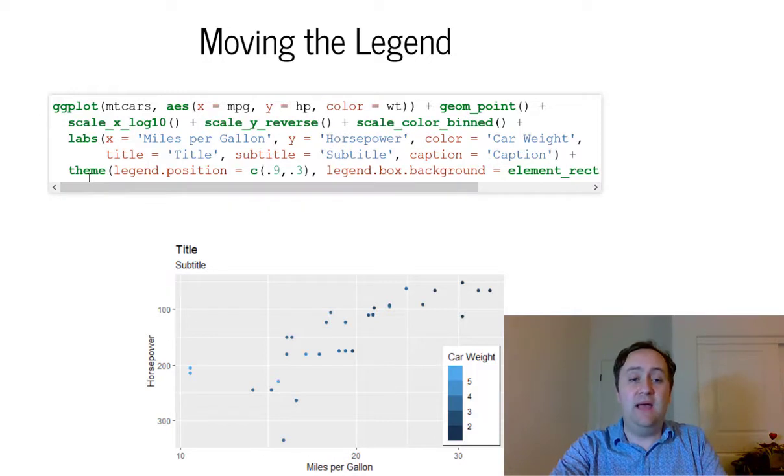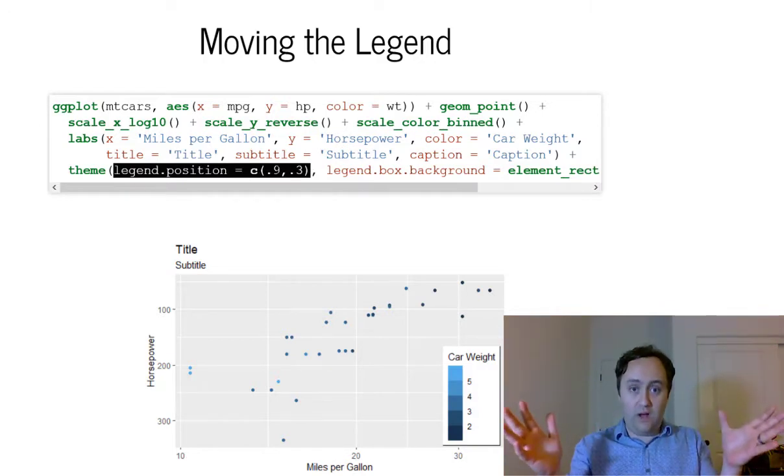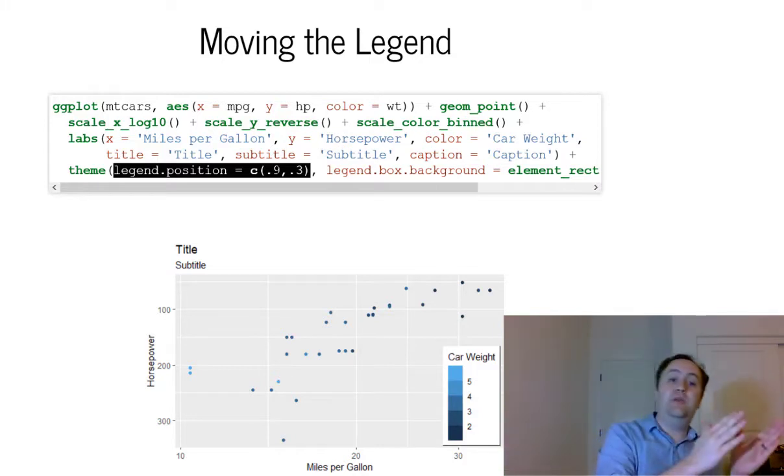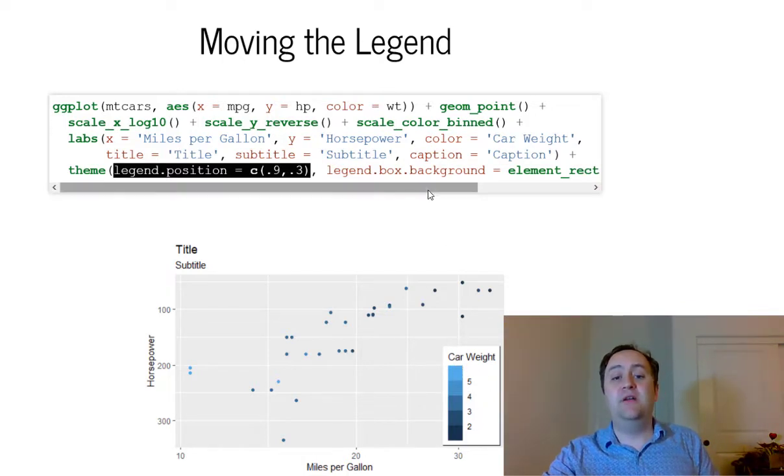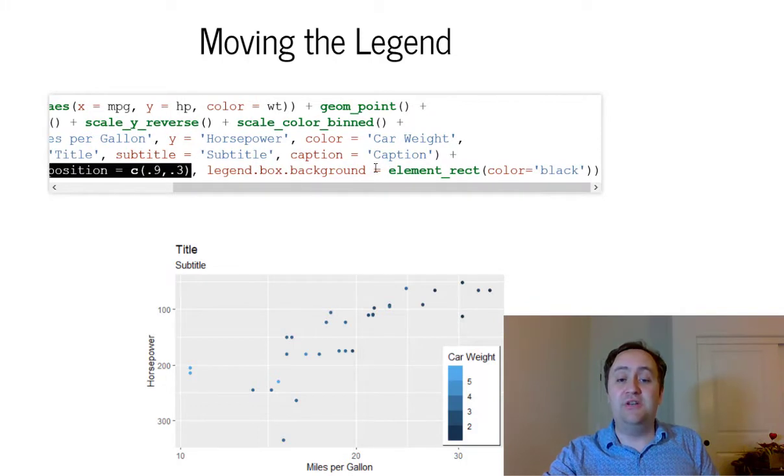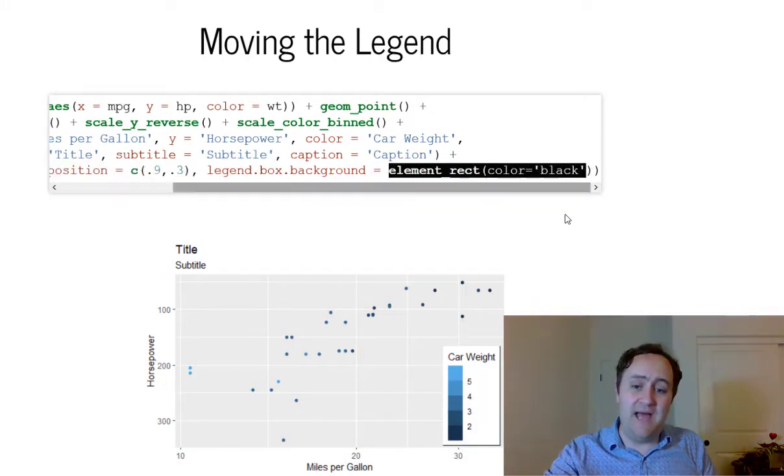So if we add a theme part to our ggplot object, we can specify in there the legend position, and just tell it the x and y coordinates where the 1 here would be all the way to the right, 0 would be all the way to the left of the box that it's in. And so this would be 0.9 of the way along the x-axis and 0.3 up. And you can also change the legend background by doing legend.box.background is a rectangle element, and I want that to be black.